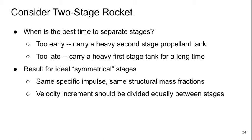So if we have what we call ideal symmetric stages, which means both stages have the same specific impulse and the same structural mass fractions, then we get the result that the velocity increment should be divided equally between the two stages.